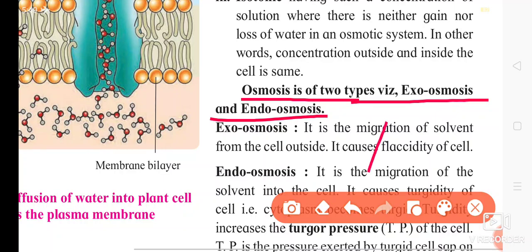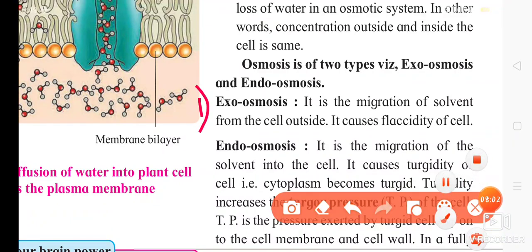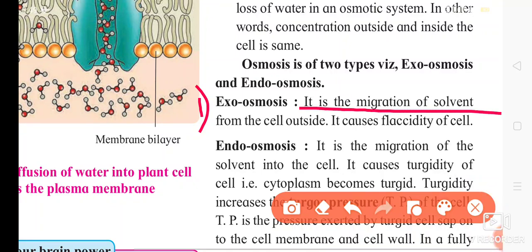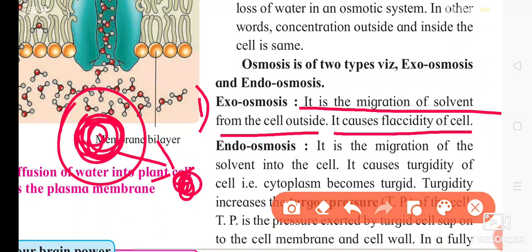Next are endosmosis and exosmosis. First, exosmosis is the migration of solvent from the cell to outside; it causes flaccidity of the cell. For example, the solvent inside the cell migrates from the inner side to the outer side — that is why this process is called exosmosis, and the cell becomes flaccid or shrunken.